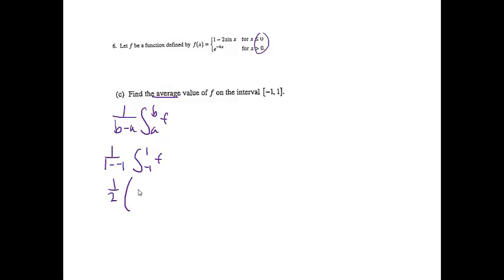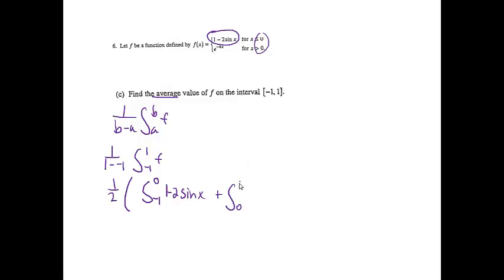We get 1/2 times the sum of two integrals. The first integral goes from negative 1 to 0 of 1 minus 2 sine x, and then we add the integral from 0 to 1 of e to the negative 4x.